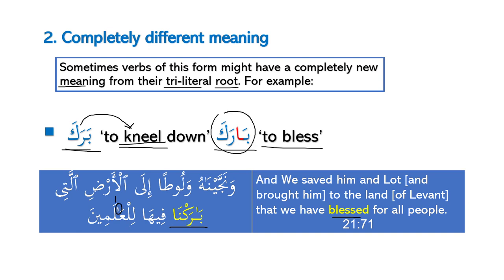So بارَك means 'to bless', and the present tense is يُبارك. مصدر is مُباركةً. اسم الفاعل is مُبارِك (with كسرة), and اسم المفعول is مُبارَك (with فتحة). For example: لَيلةً مُبارَكةً — a blessed night — where مُبارَك is اسم المفعول. And we greet each other with عيد مُبارَك meaning 'May Allah bless you with a blessed Eid'.